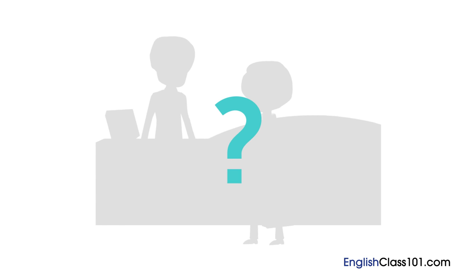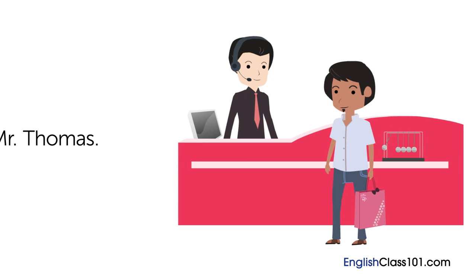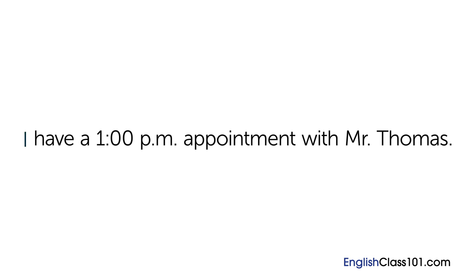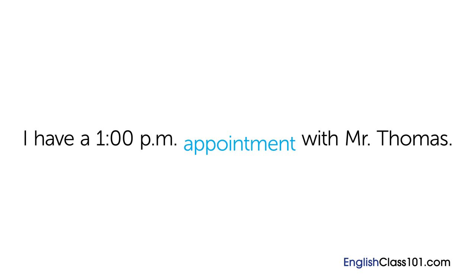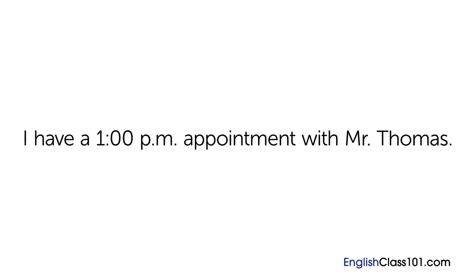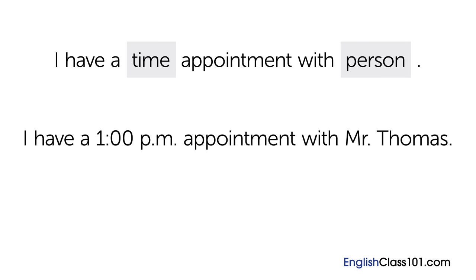Do you remember the sentence Gustavo used to tell the receptionist about his appointment? "I have a 1 p.m. appointment with Mr. Thomas." First is the phrase "I have a," next is the time "1 p.m.," after this is the word "appointment," next is the word "with," and finally you add the name of the person you are meeting with — Mr. Thomas. Together, it's "I have a 1 p.m. appointment with Mr. Thomas." You can use this structure to explain the details anytime you have an appointment. The structure is: I have a [time] appointment with [person].